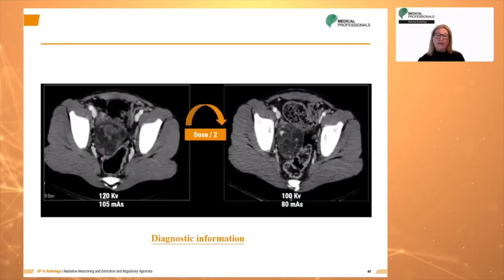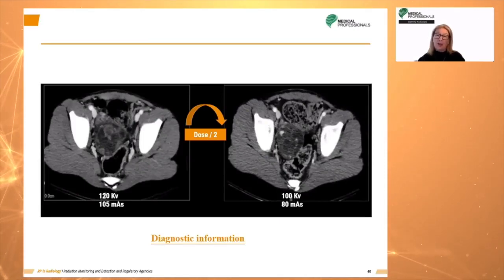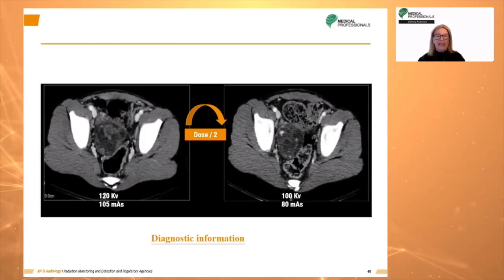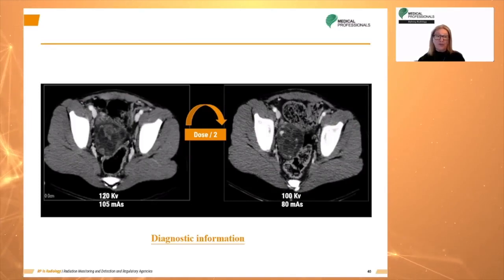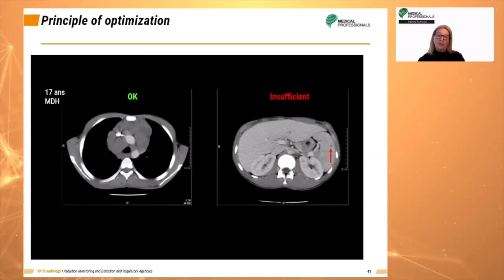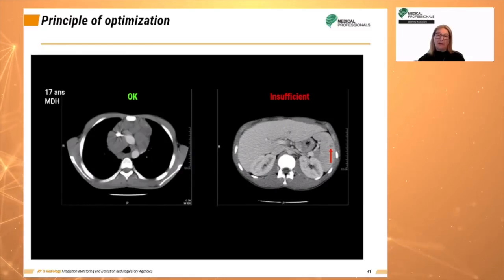Optimization of each acquisition protocol is important to reduce patient dose while keeping good image quality. For example, reducing from 120 kVp and 105 MAS to 100 kVp and 80 MAS still gives a good quality image with a reduction in patient dose. This aligns with the ALARA principle. It is important to note that optimization does not mean underexposure — acquisition constants should not be underestimated to the point of insufficient image quality.